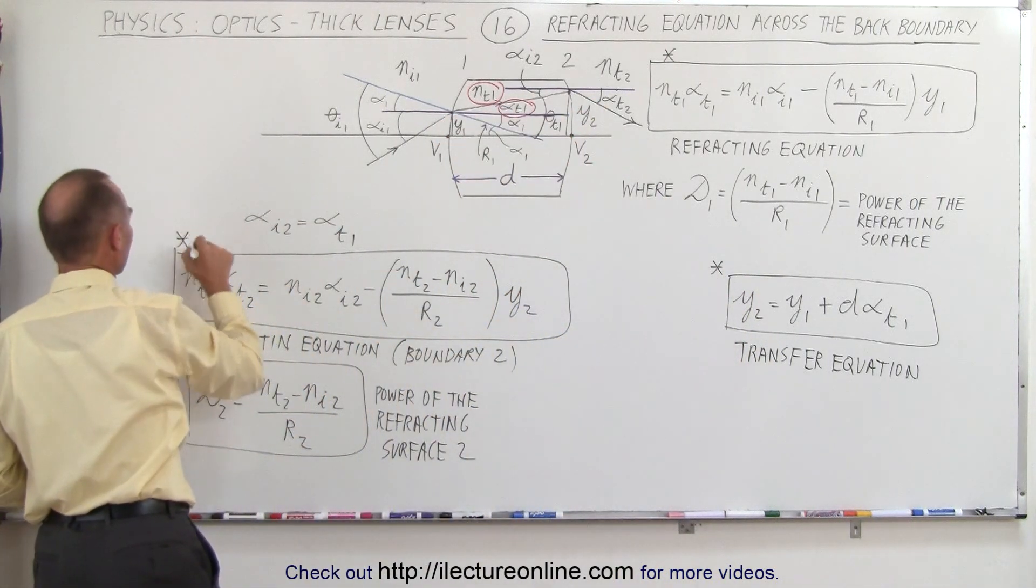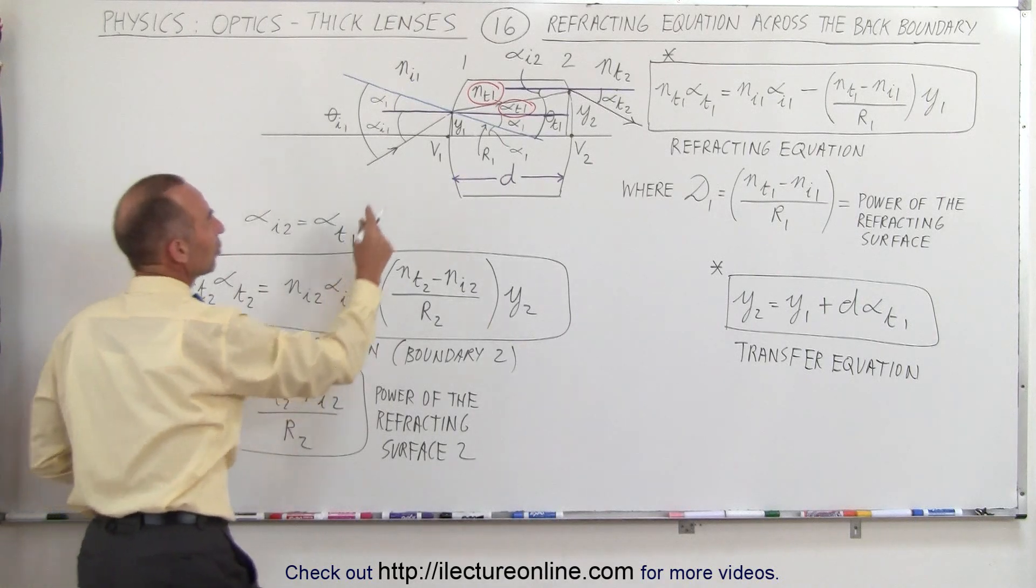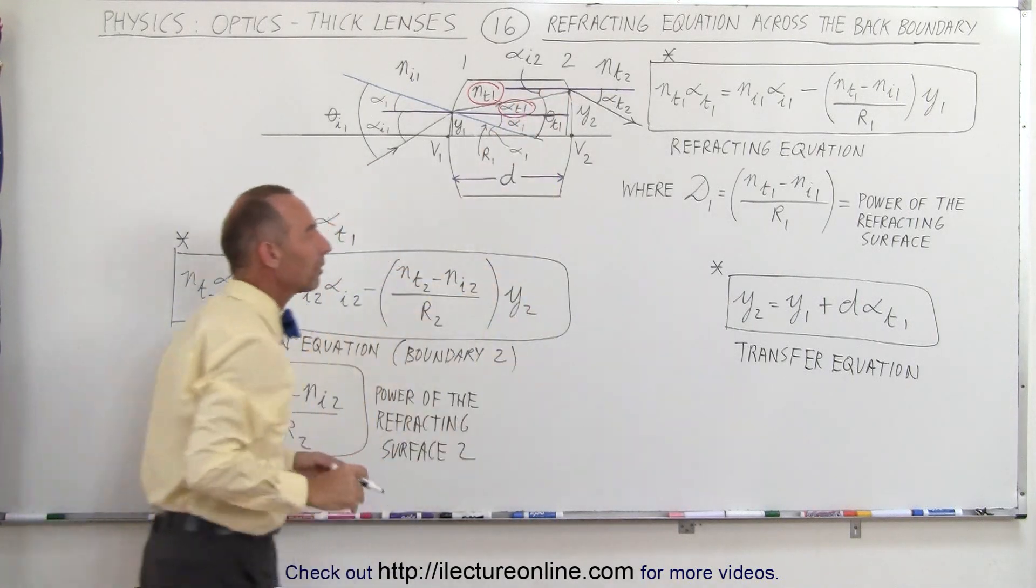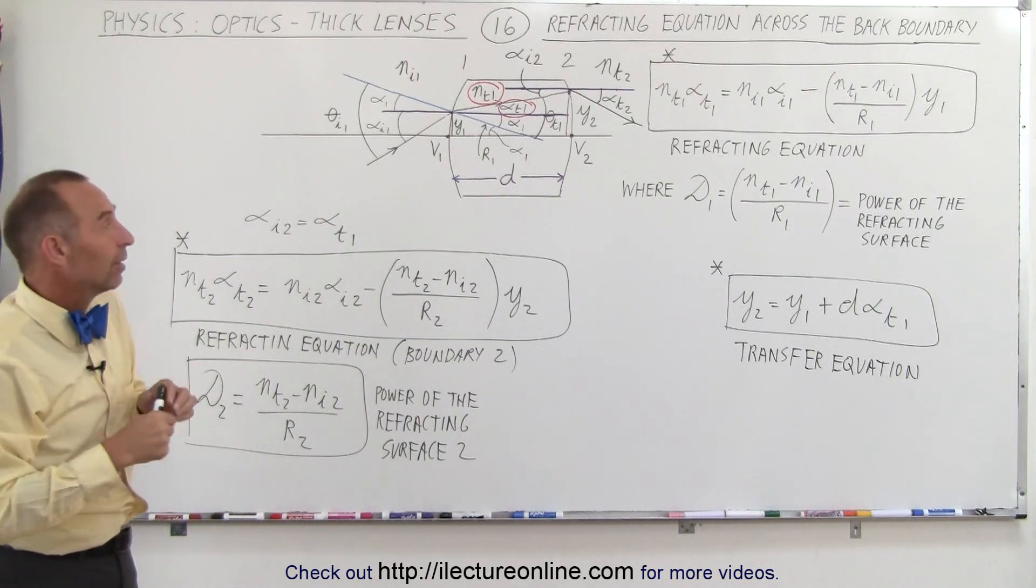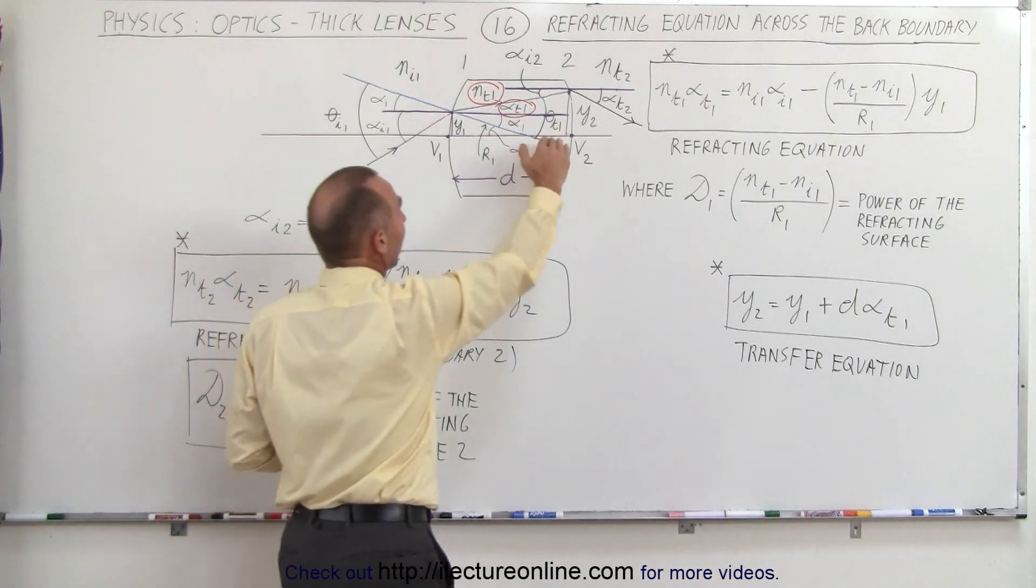And then we have the third equation, another refracting equation, to describe what happens when it crosses boundary number 2. Those are the three equations necessary each time we go through a lens.